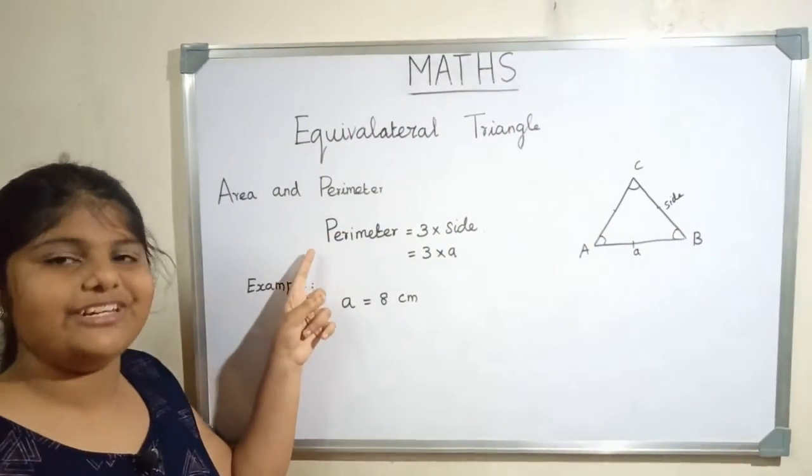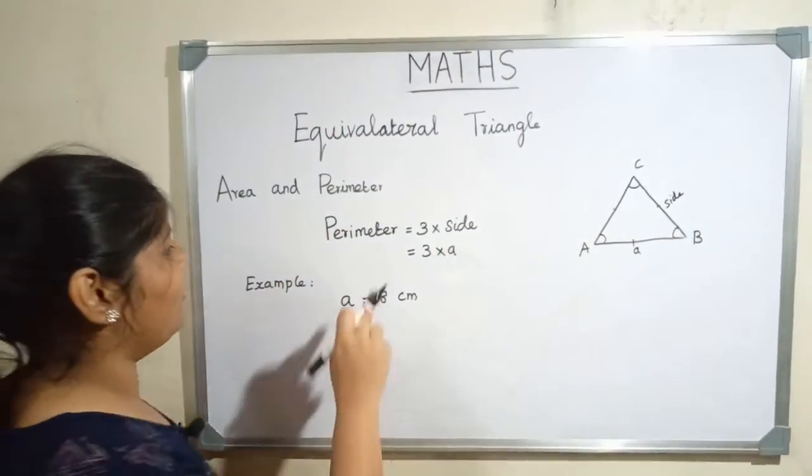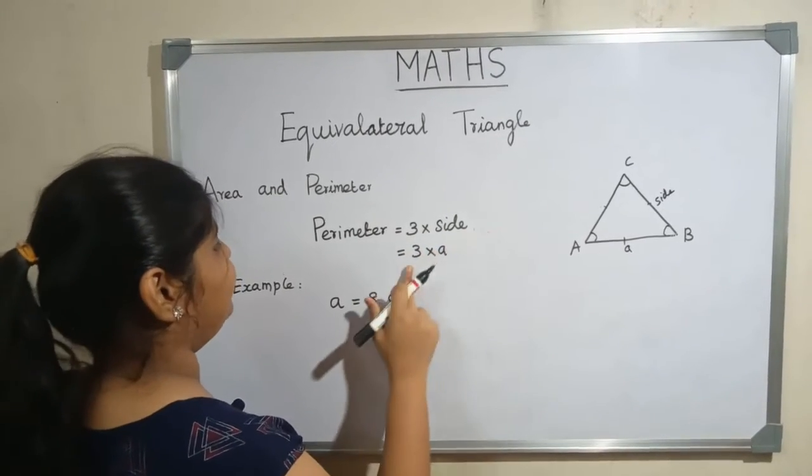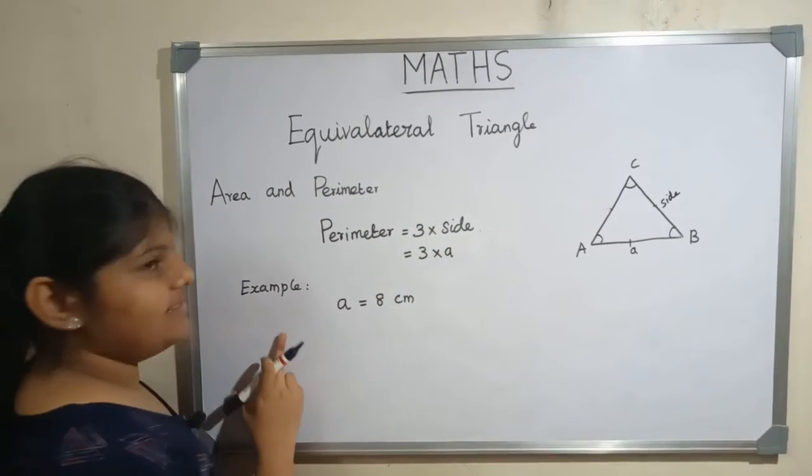Now we will see the perimeter of an equilateral triangle. The formula is 3 multiply side, that is 3a. Let us see an example.